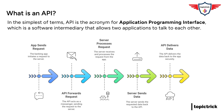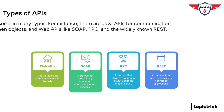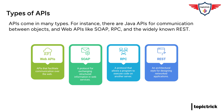So APIs are essentially the messengers of the digital world, carrying requests and delivering data between different applications. Now, I know there are different types of APIs out there. Could you walk us through some of the main ones? Sure. One common type is web APIs — these are APIs that are accessed over the internet using the HTTP protocol. So things like checking the weather on my phone or posting on social media, those are all using web APIs. Web APIs are incredibly versatile, and they're used in countless applications and services.